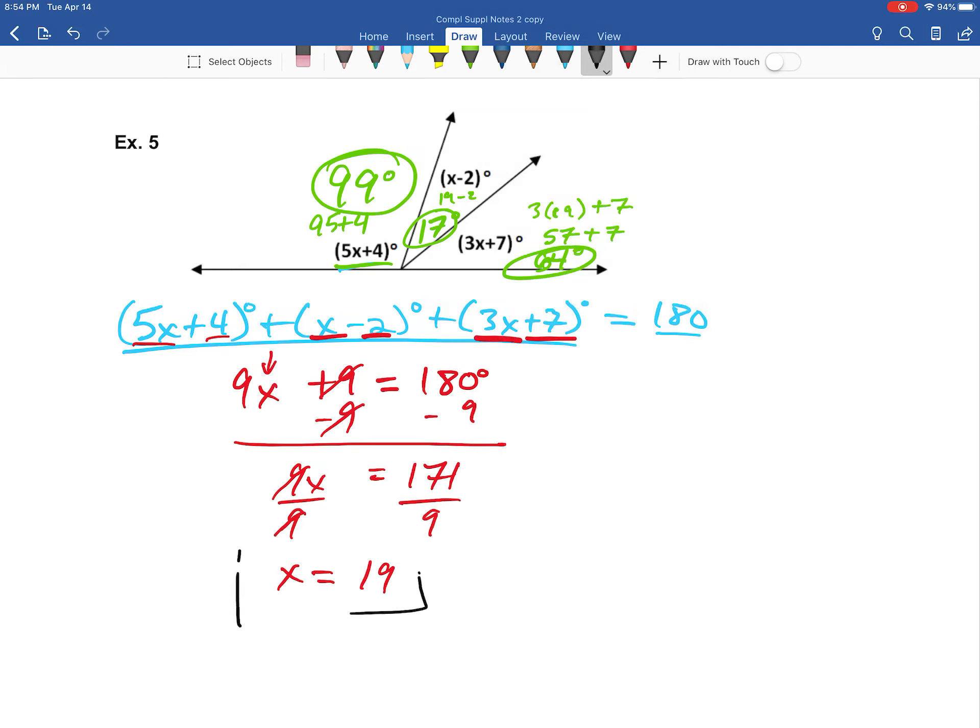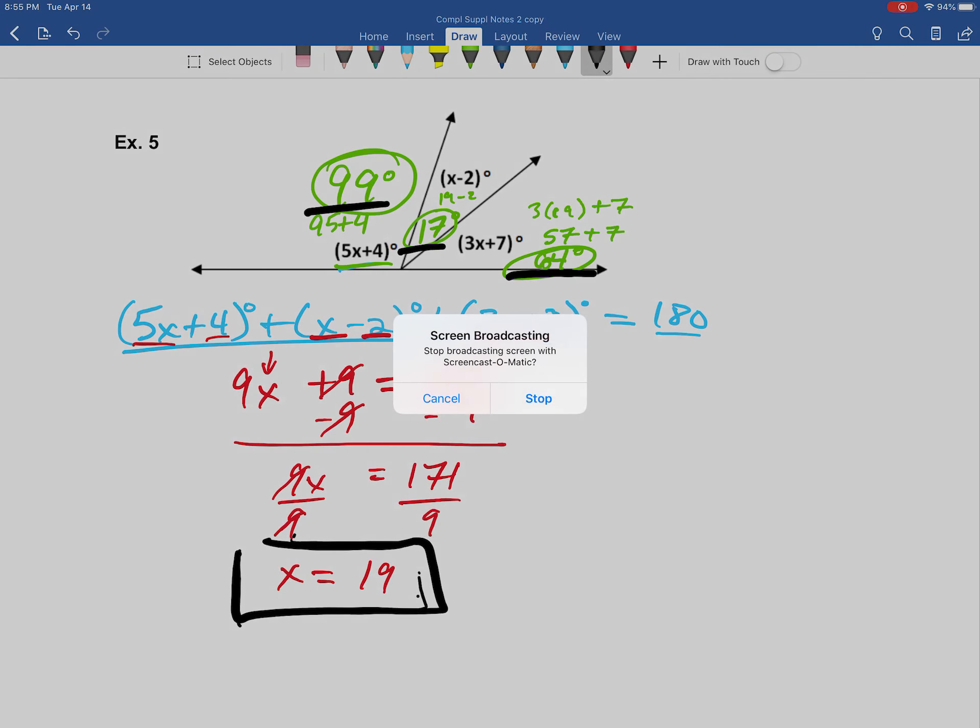But again, our main question here is solving for x. We did that. Here it is. x is 19. But it's always really handy to kind of know those angles. But again, though, that is example 5 from our complementary and supplementary day 2 set of notes.